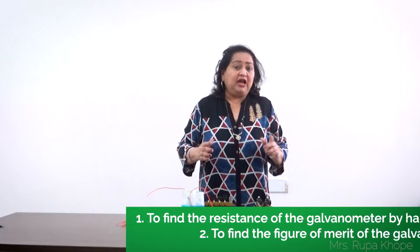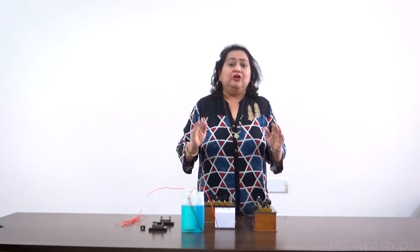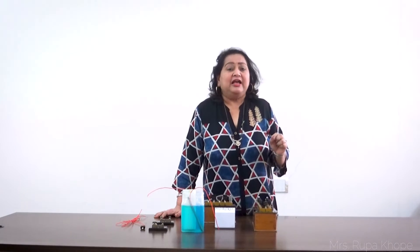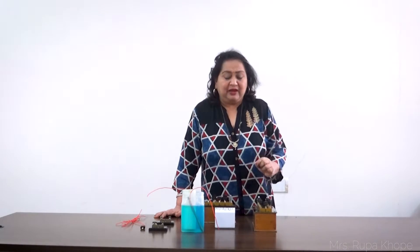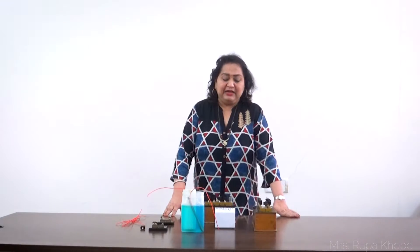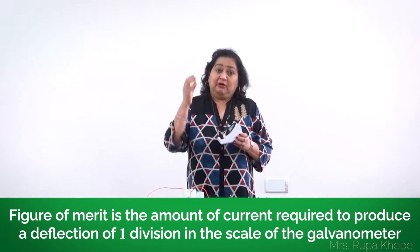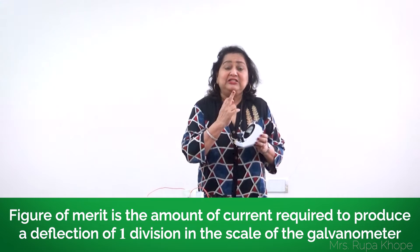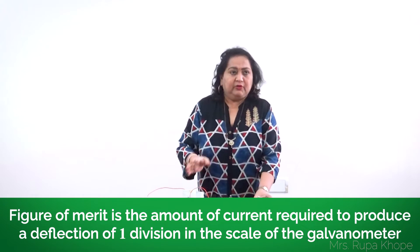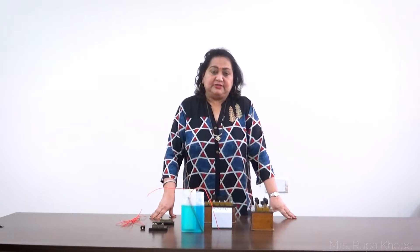In my concept part, I have explained nicely what is figure of merit. So please see, click the link in the description box and learn the concept very well to understand this experiment. So figure of merit is the amount of current required for one scale deflection. Now aim of the experiment you know, apparatus required.